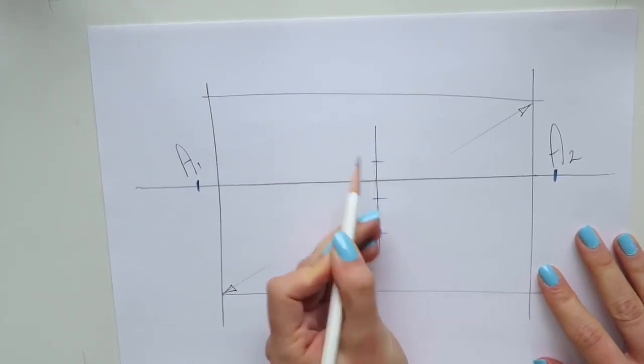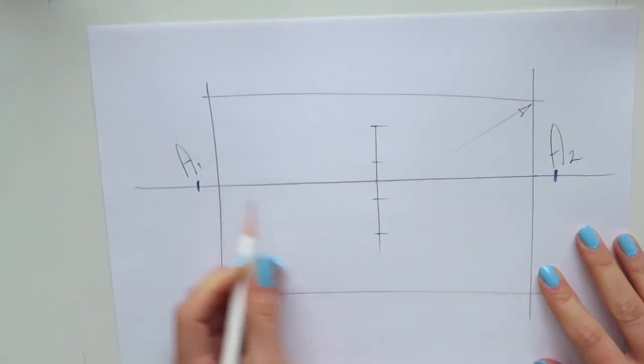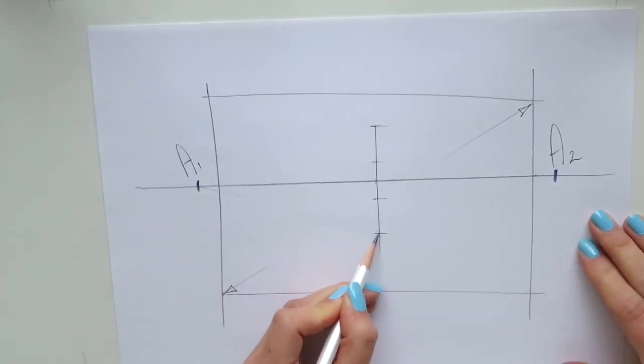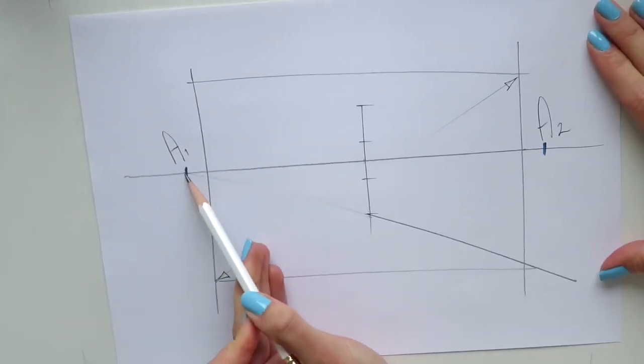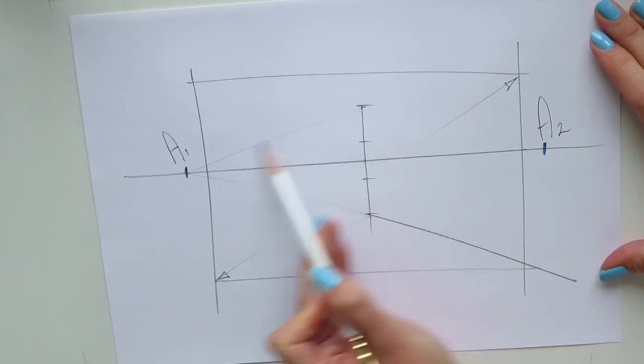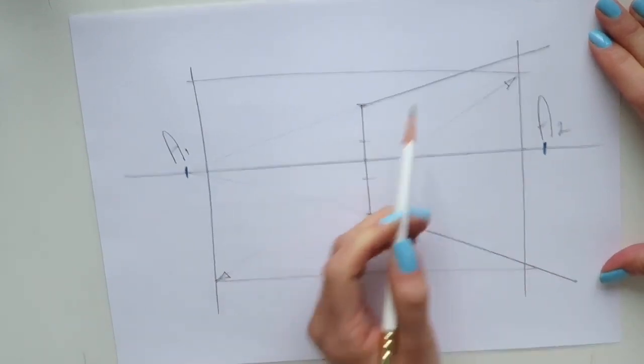And divide this line into three equal parts. Let's say that our ceiling equals three meters. In my case, I want to work with the scale 1 to 50, which means one meter in reality equals two centimeters on my paper.